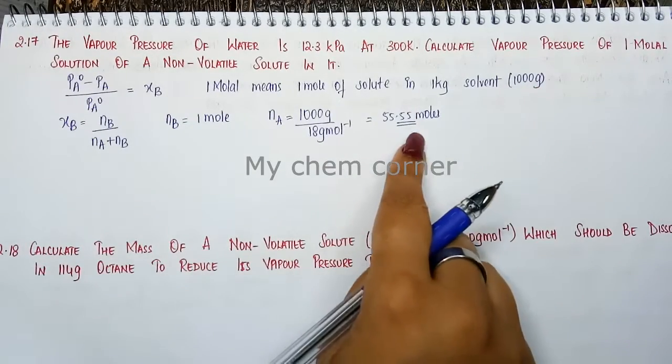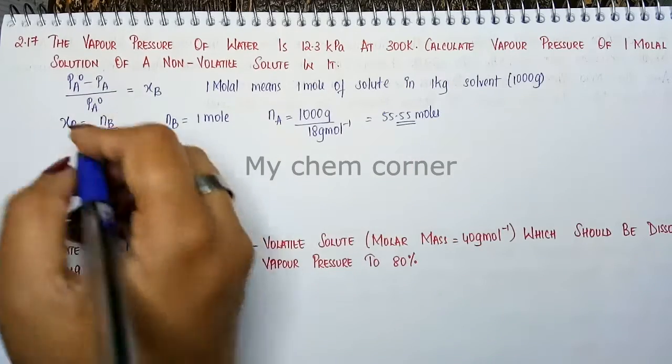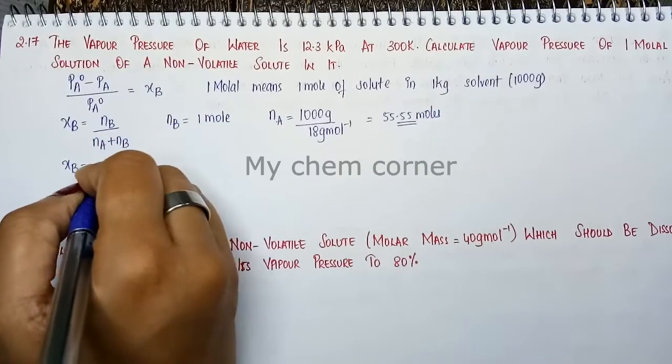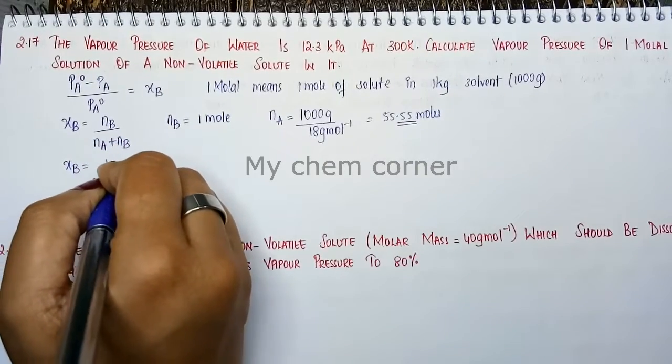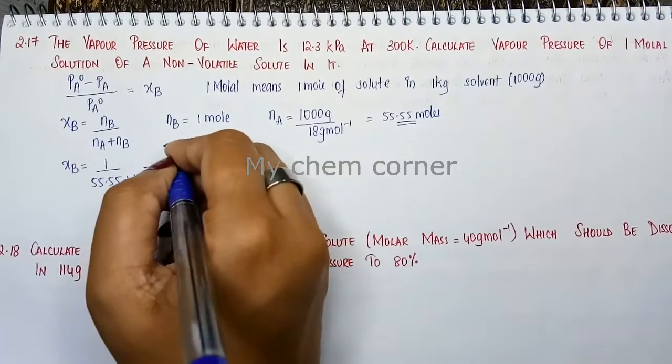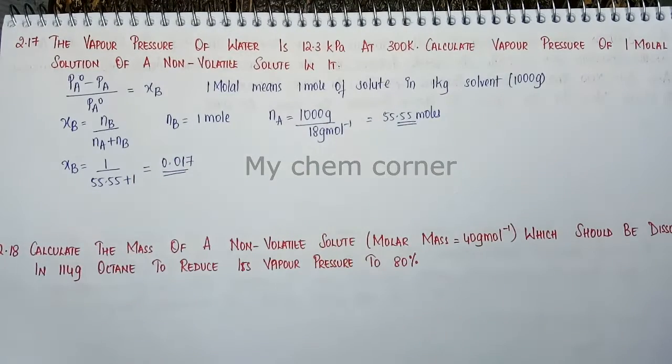So now we have N_A and N_B, let's substitute it here. So X_B is equal to N_B is 1 divided by 55.55 plus 1. When I simplify this, I will get the mole fraction as 0.017 as the value of X_B.